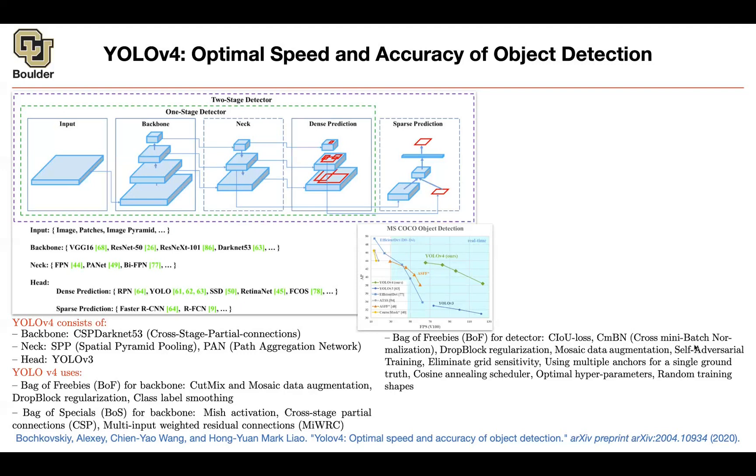There is minibatch normalization, and it's cross-minibatch normalization. Drop block. Again, you're using it. There is mosaic data augmentation. Self-adversarial training, we covered them when we were going through adversarial examples.